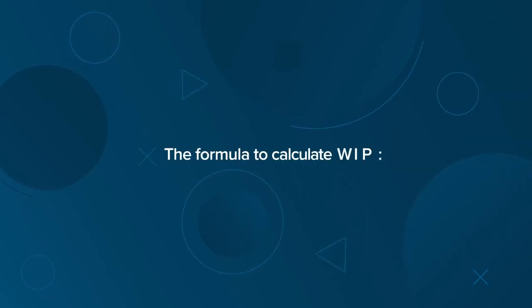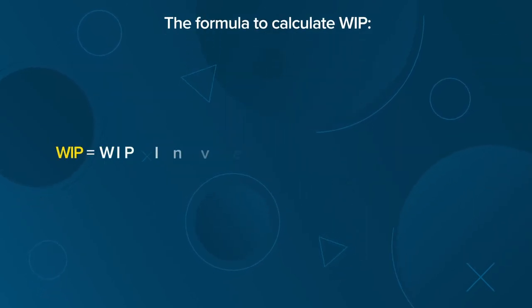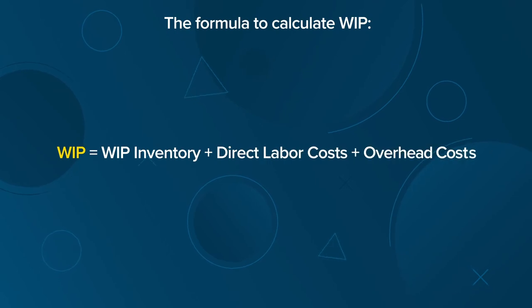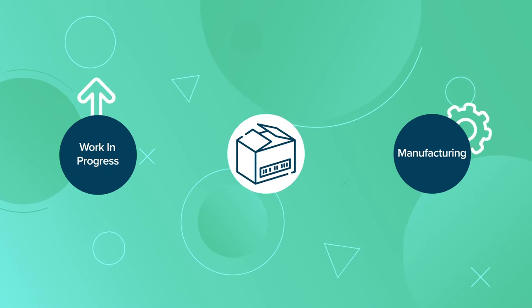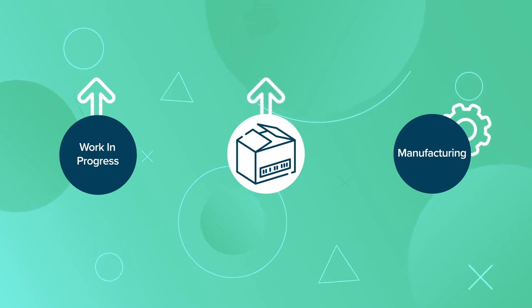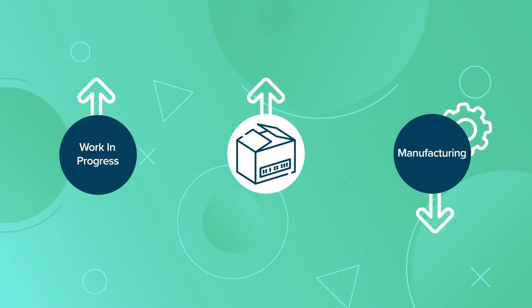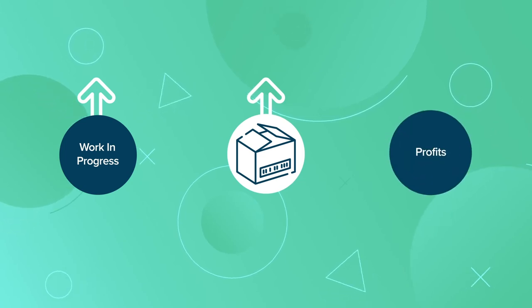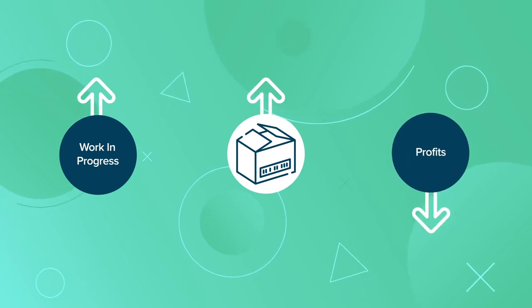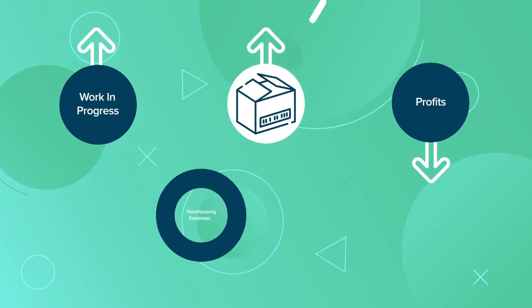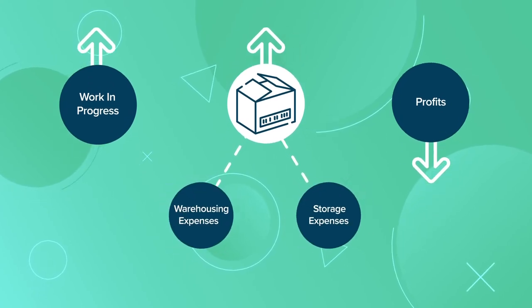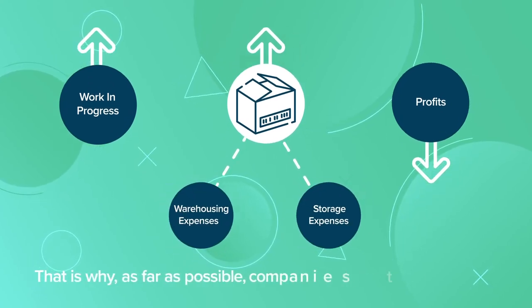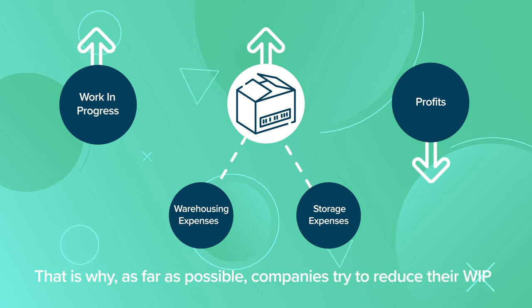The formula to calculate WIP is: WIP inventory plus direct labor costs plus overhead costs. High WIP numbers represent a large supply of unfinished inventory and can indicate inefficiencies in the company's manufacturing processes. They can also bring down profits because unfinished inventory carries warehousing and storage expenses. That is why, as far as possible, companies try to reduce their WIP.